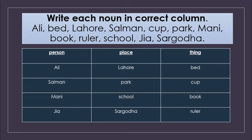Come towards the first noun, that is Ali. Ali is the name of a boy, so we write Ali in the person column. The second one is bed — bed is a thing, so we write bed in the thing column. Lahore is the name of a place. Salman is the name of a boy. Cup is a thing. Park is the name of a place.